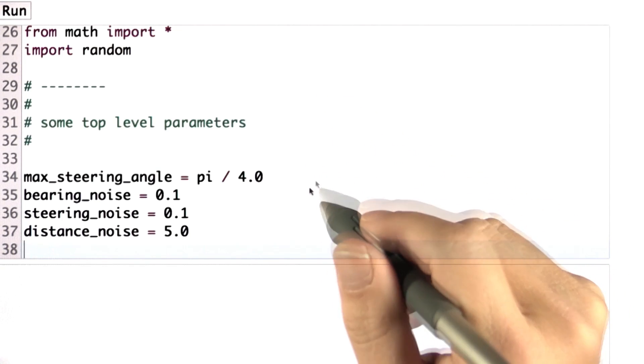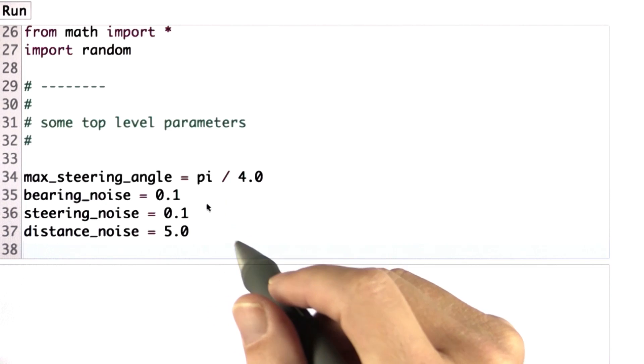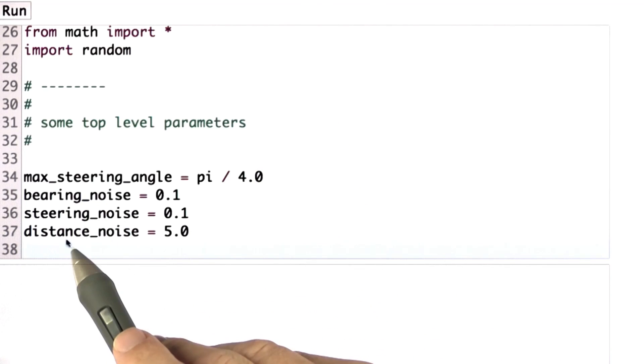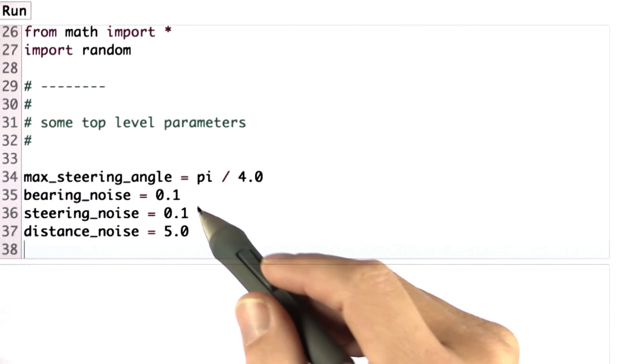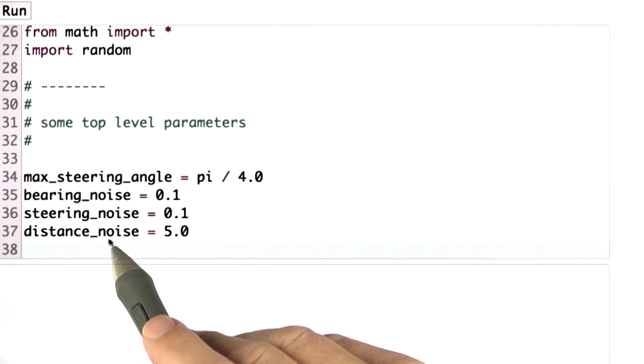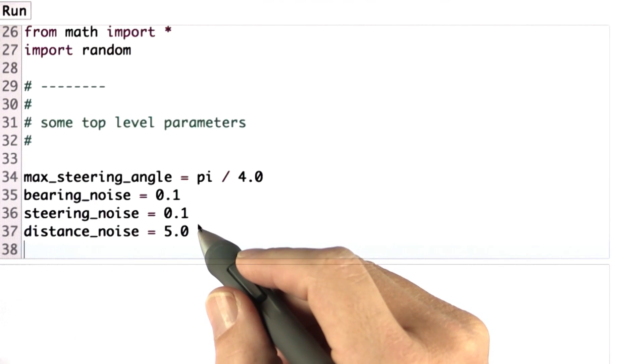The key new thing you have to do is you have to work on the noise. There is bearing noise and steering noise and distance noise. The code that you wrote didn't have any of those. I want you now to modify your procedures to accommodate this steering noise, distance noise, and bearing noise, and all of it should be Gaussian.